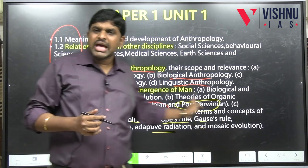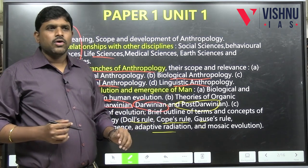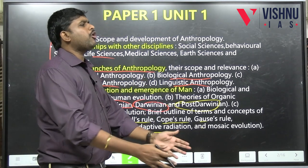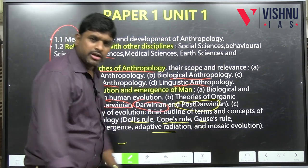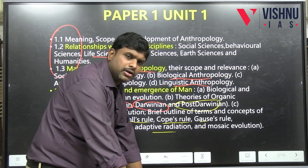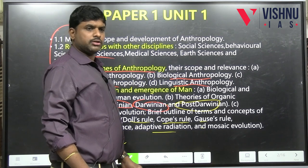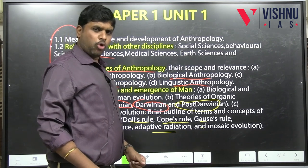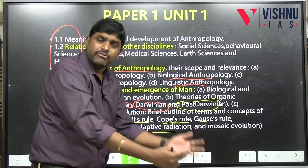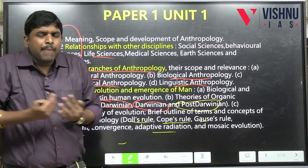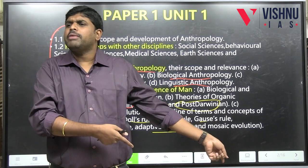For example, Dole's rule states that when man evolves in a particular direction, his evolution is irreversible. I evolved from quadrupedal to knuckle walking, then bipedal, then erect posture. You cannot go back to knuckle walking or quadrupedal — evolution is irreversible. Once it has happened, it cannot be reversed. This concept was given by Dole.